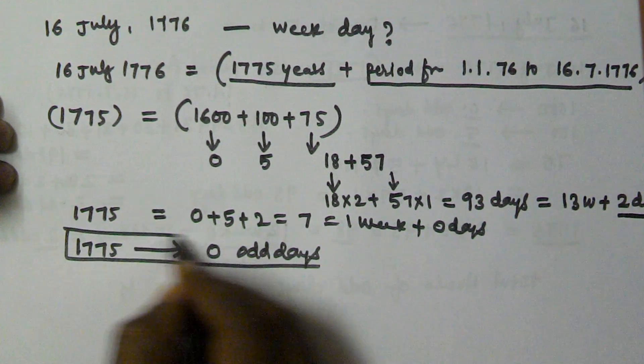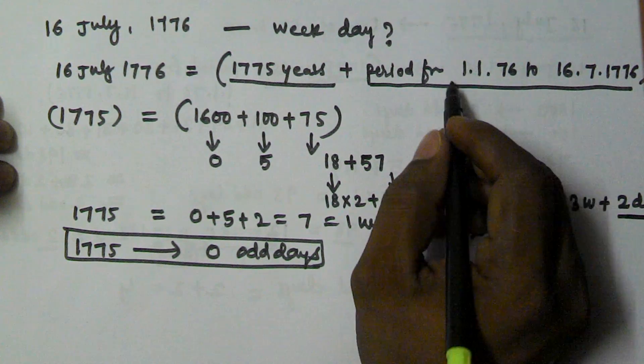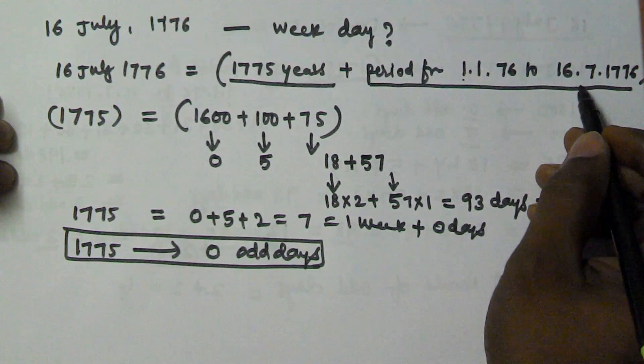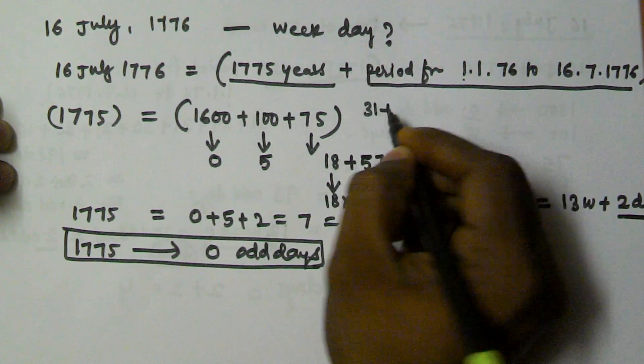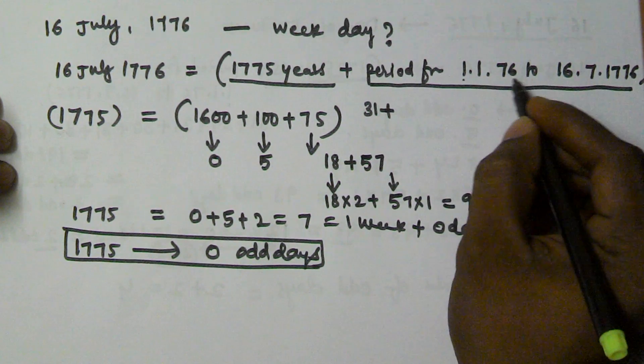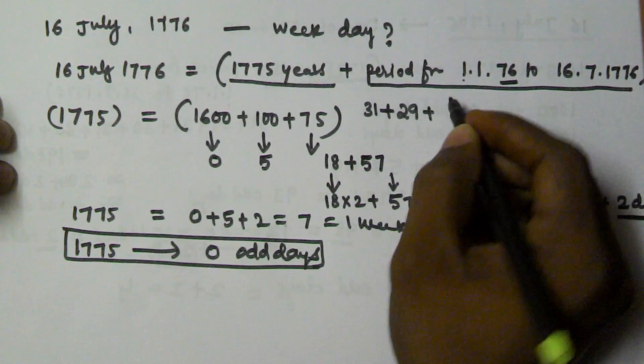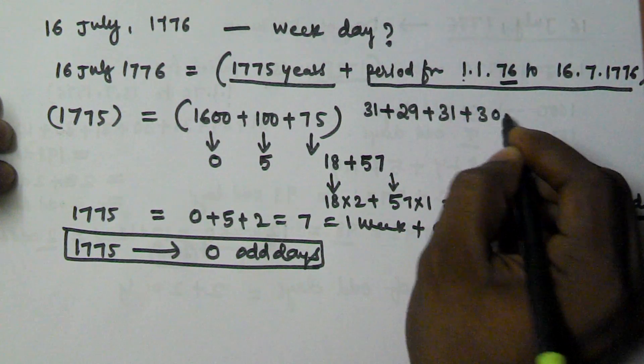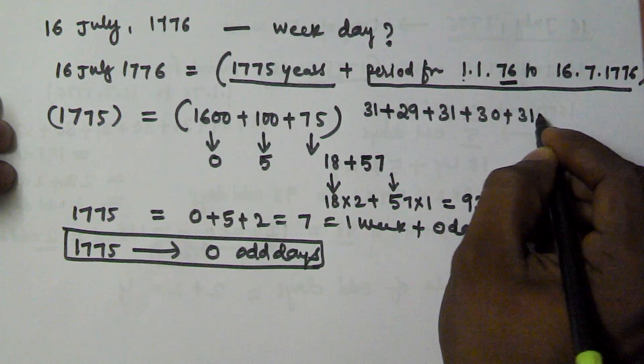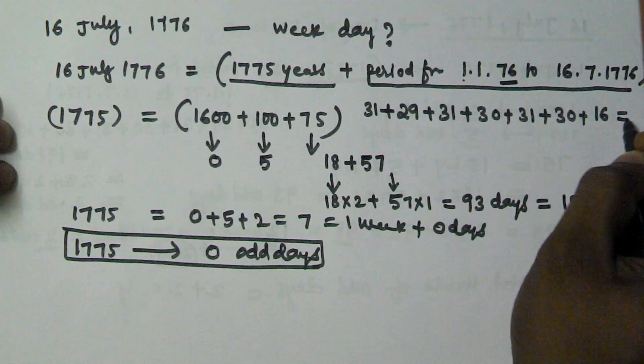Now let's find the odd days from period January to July 16th. January contains 31 days, 1776 is a leap year so it is going to contain 29 days. And then March 31 days, April 30 days, May 31 days, June 30 days, and July 16th.